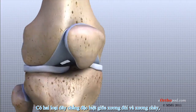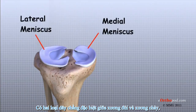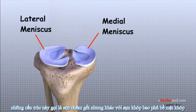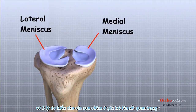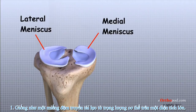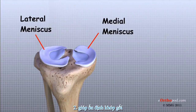Two special types of ligaments, called menisci, sit between the femur and the tibia. These structures are sometimes referred to as the cartilages of the knee, but the menisci differ from the articular cartilage that covers the surface of the joint. The two menisci of the knee are important for two reasons: they work like a gasket to spread the force from the weight of the body over a larger area, and they help the ligaments with stability of the knee.